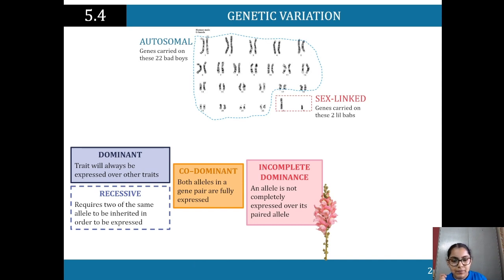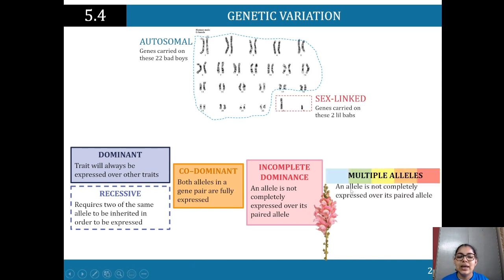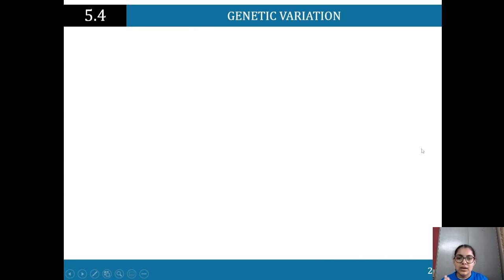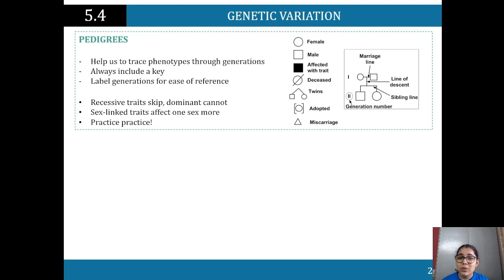Multiple alleles is when there are more than two allele options for a trait. For instance, with a brown and white rabbit, you may see a variation of colors. If you have any questions, please ask. Try to think of these big concepts, do your own research, and replay the recording to slow things down and review.